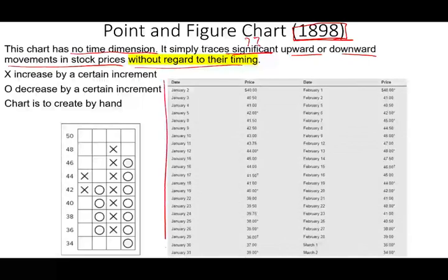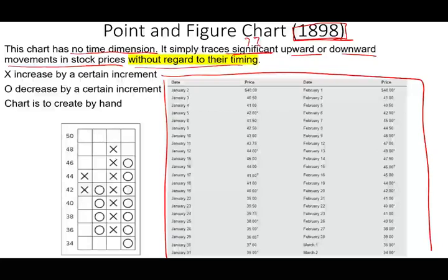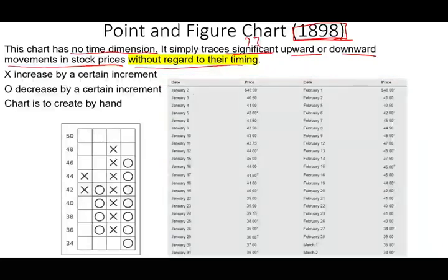For this series of prices for a particular stock, we're starting January 2nd at $40. Once we have a $2 increment — you set this yourself; usually under $100 they use a $1 increment, over $100 a $2 increment — we start filling out the chart. January 3rd the stock is $40.50, we don't do anything. January 4th it's $41. January 5th the price hits $42, which is a $2 increment — we place an X. Then we wait; it could take five, six, or seven days until we hit $42.